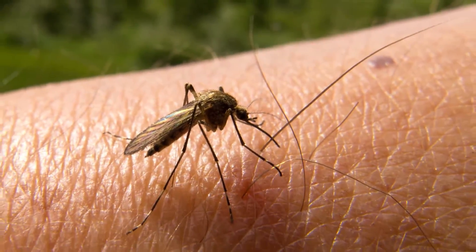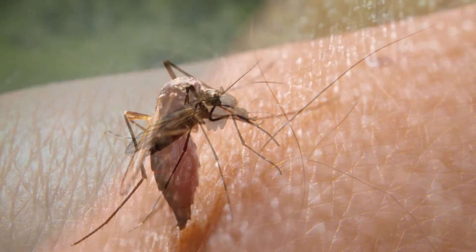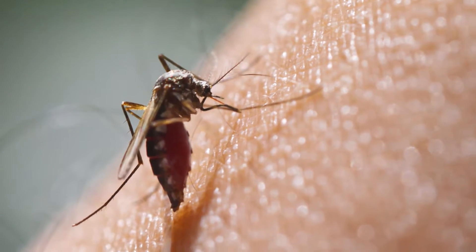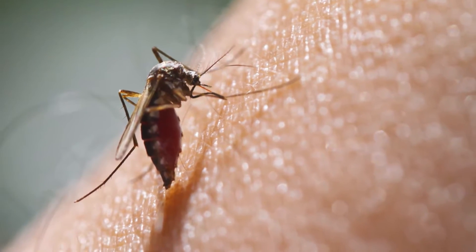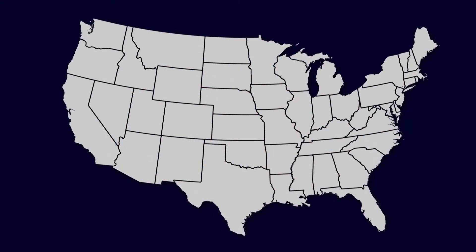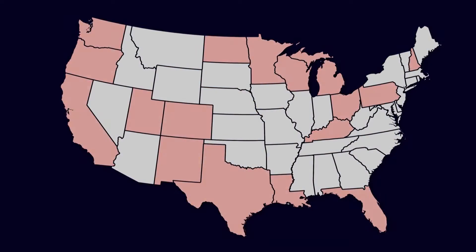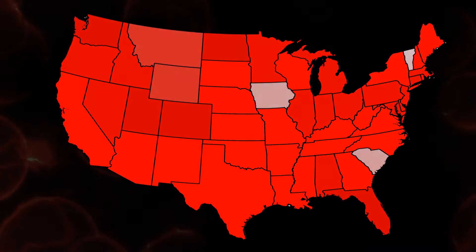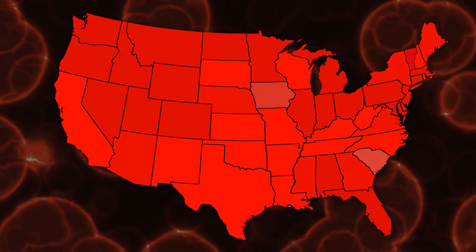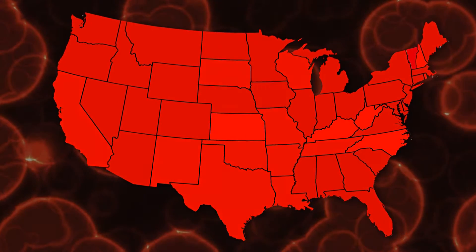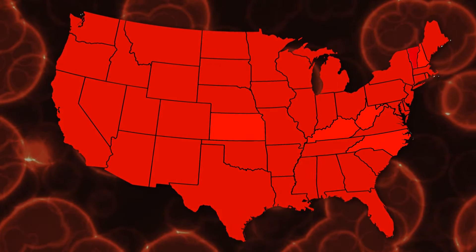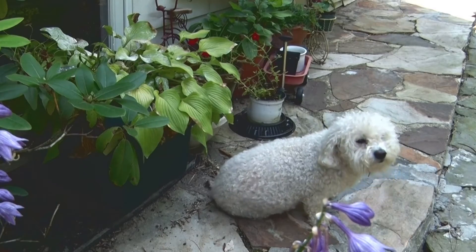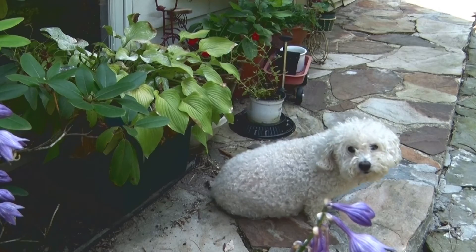Mosquitoes not only irritate and annoy people, they also transmit many disease-causing organisms to humans and animals. In the United States, dengue, chikungunya, West Nile, and several other diseases are spread by mosquitoes. Mosquitoes are also responsible for transmitting heartworm in dogs.